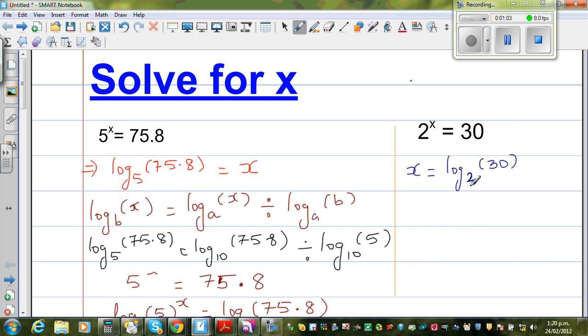The power, the index, becomes the answer and the answer becomes the argument. This is called the argument. So this is how you can read 2 to the power x is equal to 30.